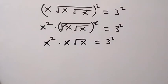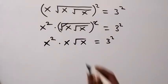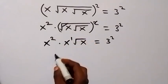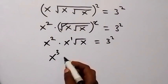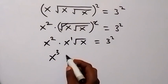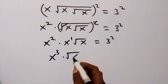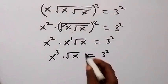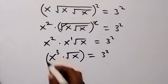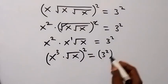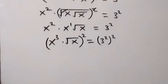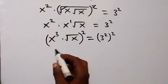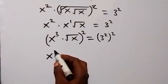From the law of indices, this is x raised to power one, and when we combine with this power we get x raised to power three, then times root x, equals three squared. From here, we can square both sides again. This square will also affect x raised to power three and root x.